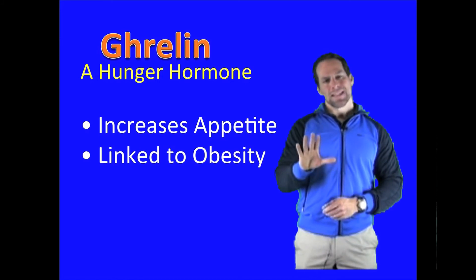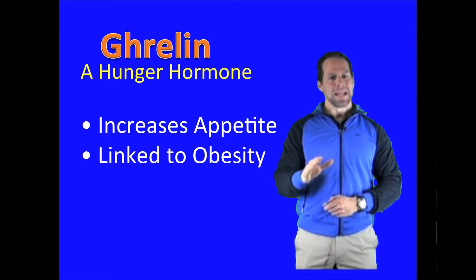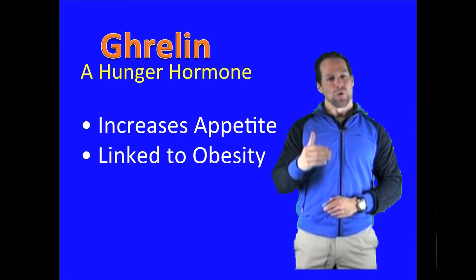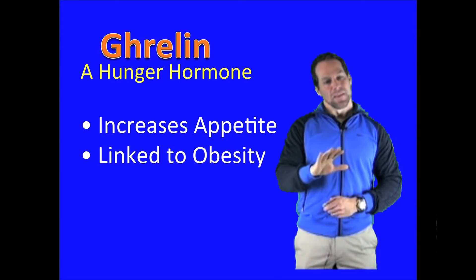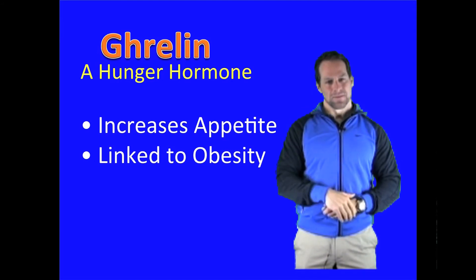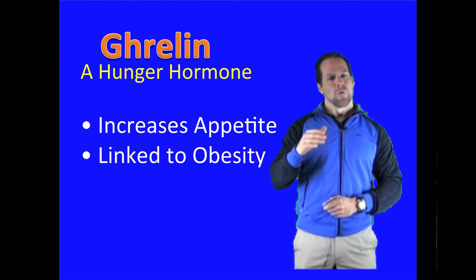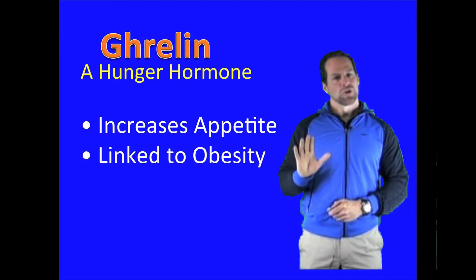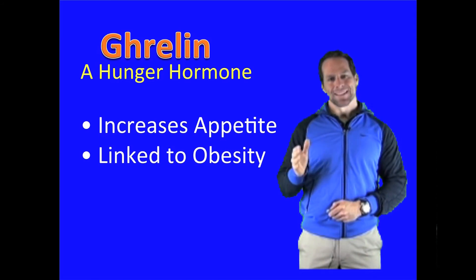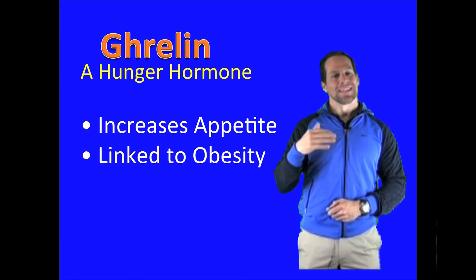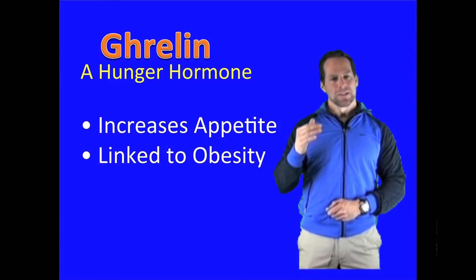Now if a person is leptin-resistant, meaning that the fat cells won't release leptin and the ghrelin levels are high, then the shutoff sequence of the feeding cycle will be out of balance. This person will be in a constant state of wanting to eat all the time. This is why so many people who go on a drastic diet or exercise program tend to have a tough time keeping the fat off, because of the damaged hormonal signaling system.